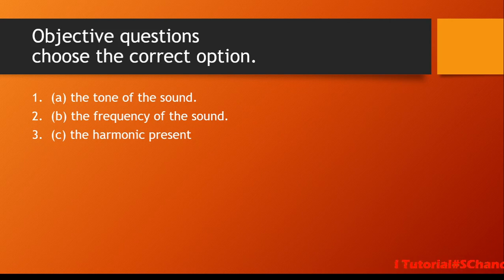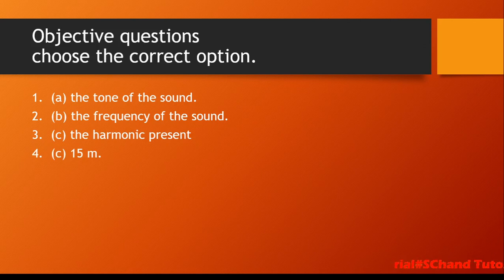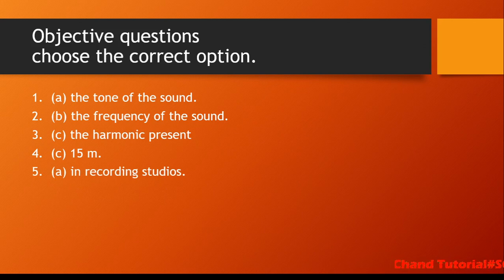Fourth: an echo will be heard clearly if the distance of the observer from the reflecting wall is — the options are 5, 10, 15, and 7 meters; the answer is 15 meters, as the required distance is 17 meters — so 15 is the closest correct option. Fifth: materials that absorb sound are used in recording studios.